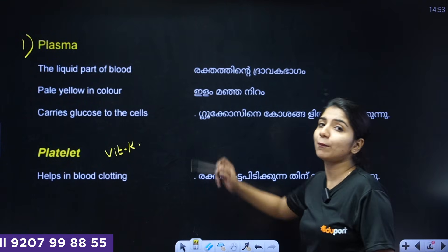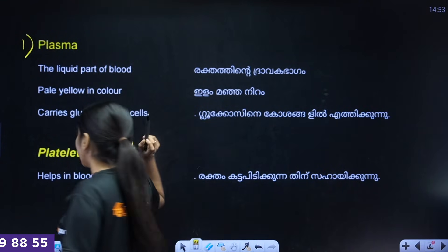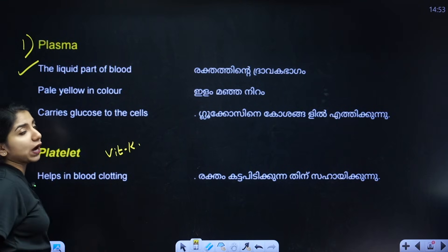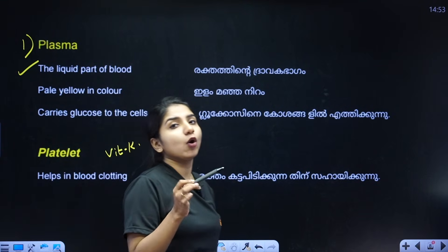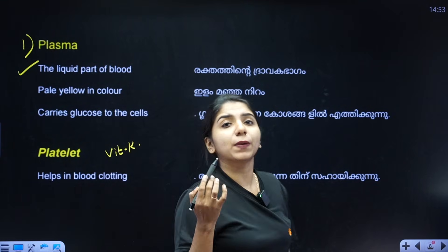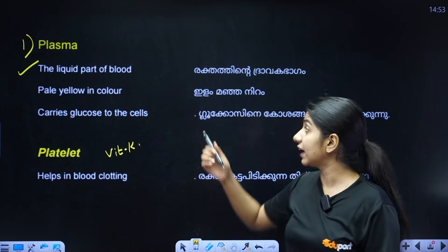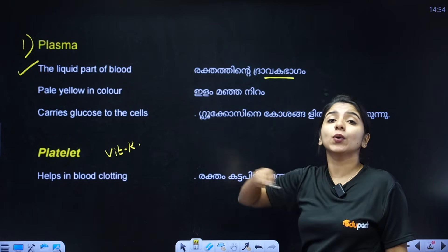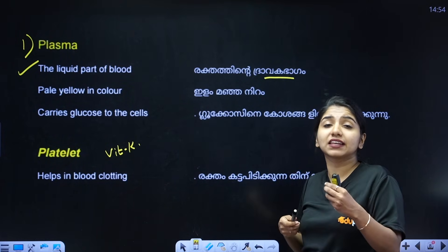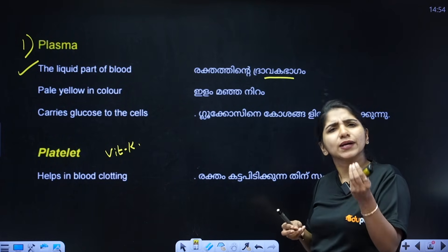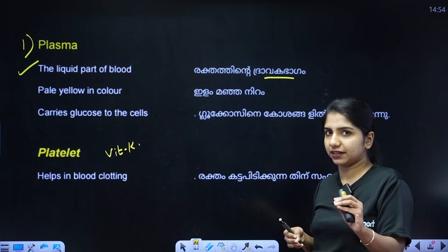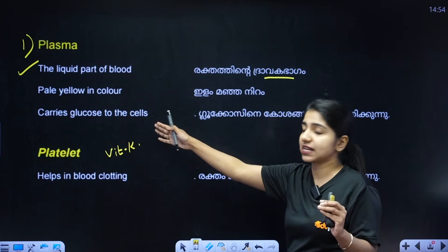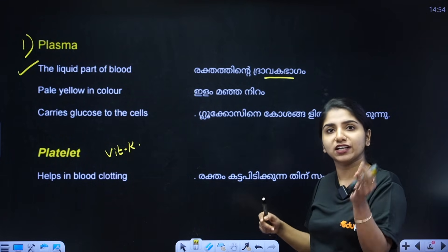Plasma is the liquid part of the blood. It is the liquid part in the blood. It carries glucose to the cells and transports molecules throughout the body.